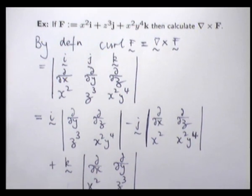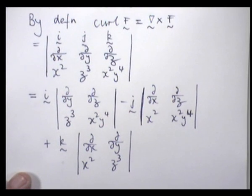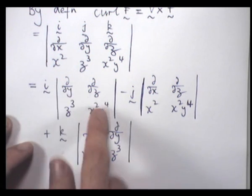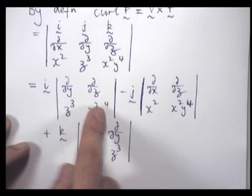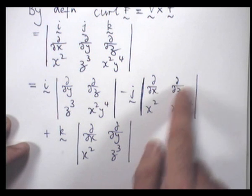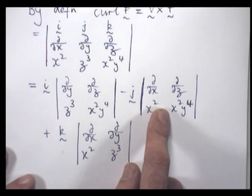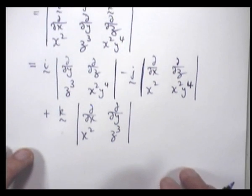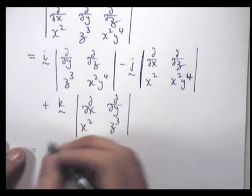Okay, so now we've reduced it down to the evaluation of two-by-two determinants. Now remember here, when we expand these, we're not really multiplying. We're operating on the given functions. Okay, so let's expand that out.